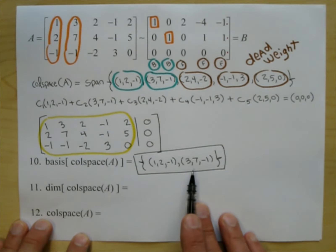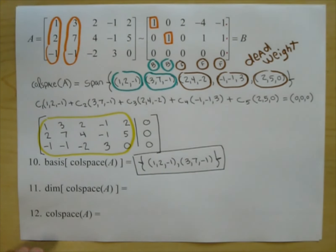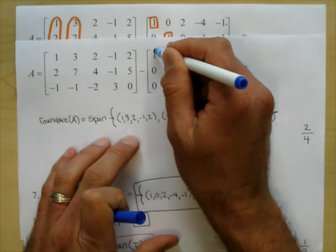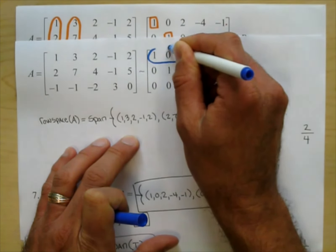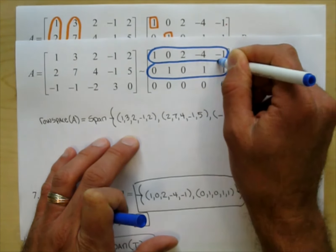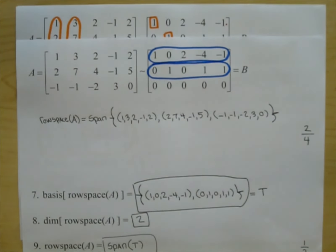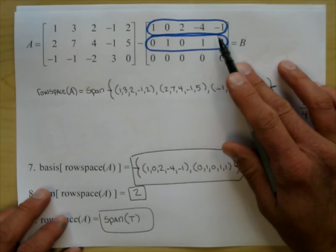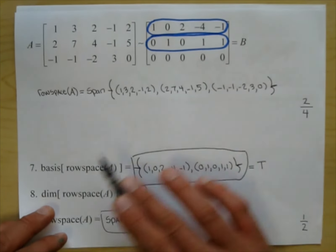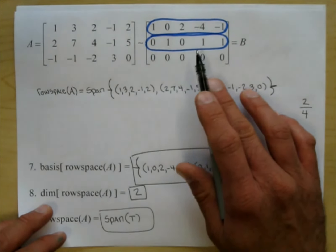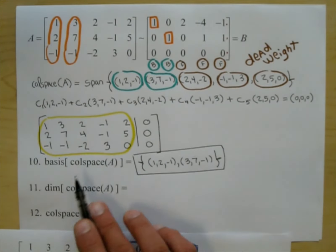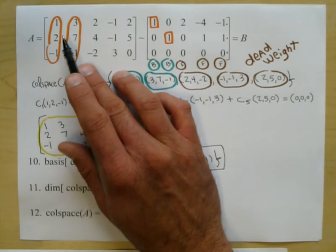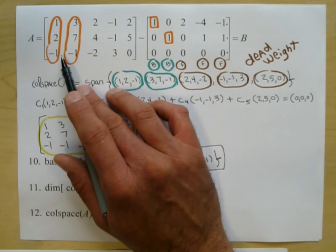Key distinction: for row space, use the rows of the reduced matrix. For column space, reduce the matrix to find which columns have leading ones, then go back to the original matrix and use those original columns. Row space uses the reduced rows; column space uses the original columns.